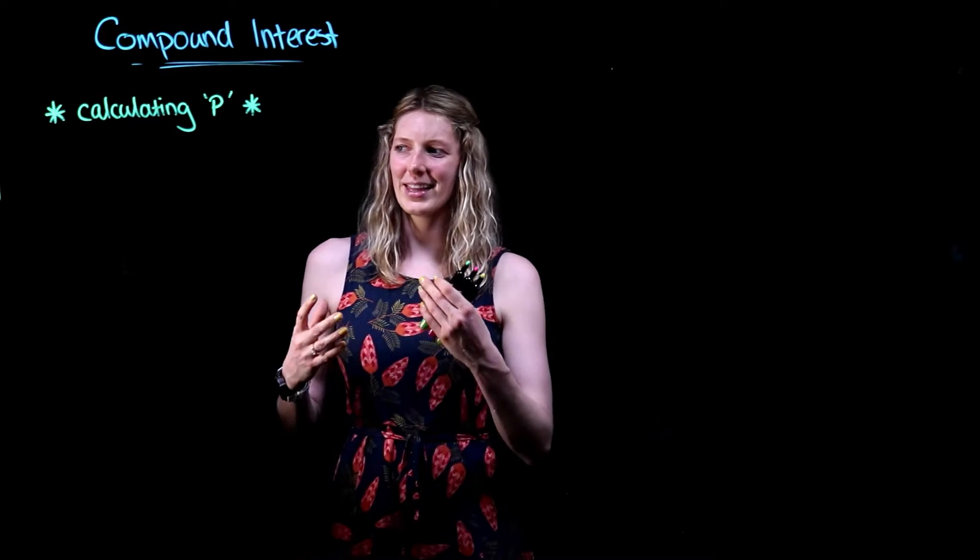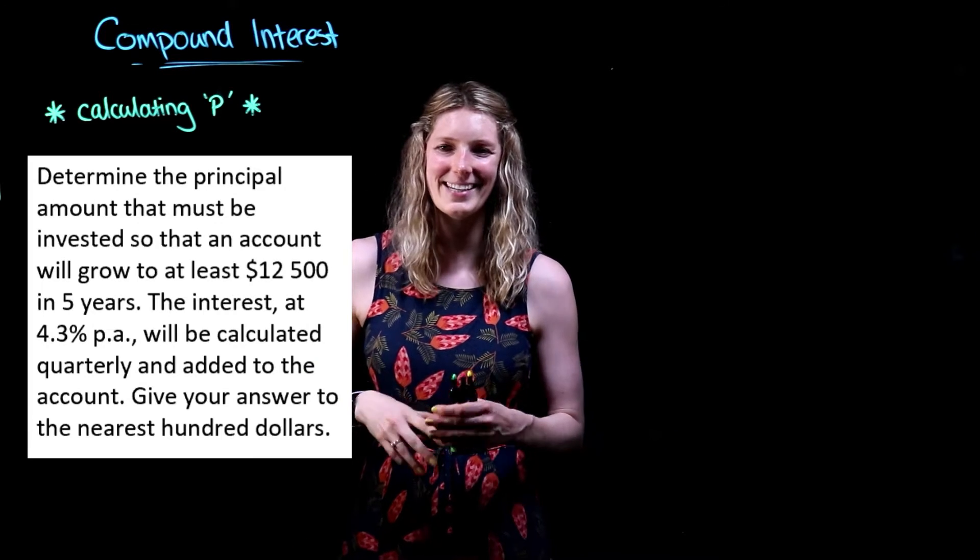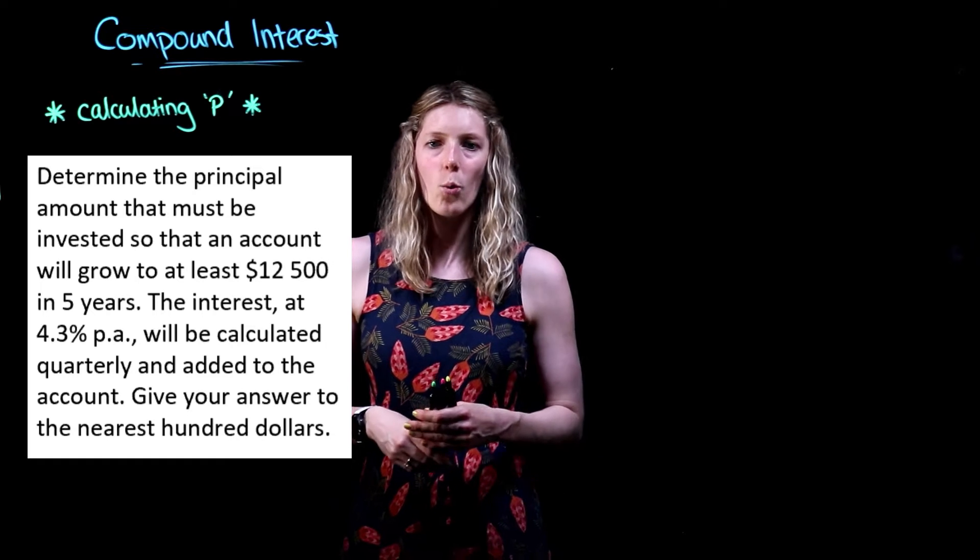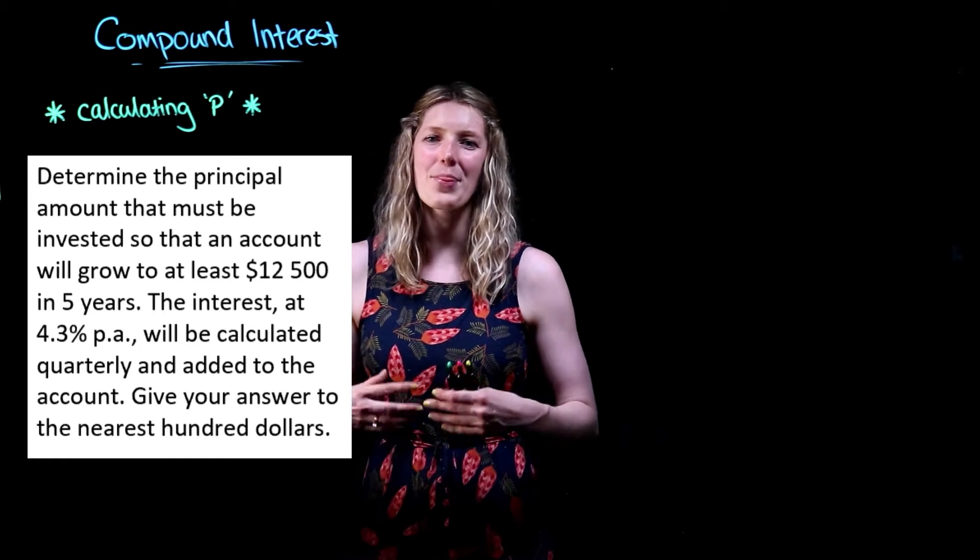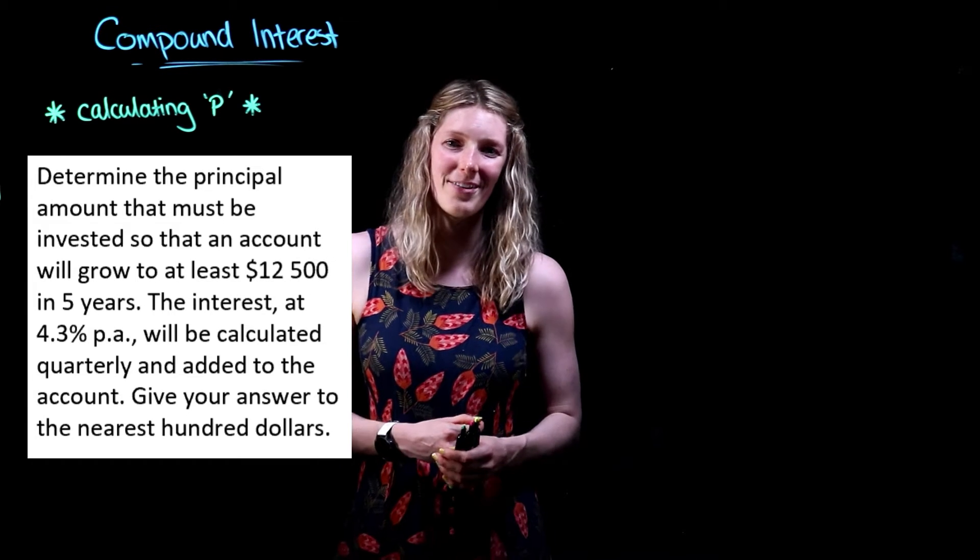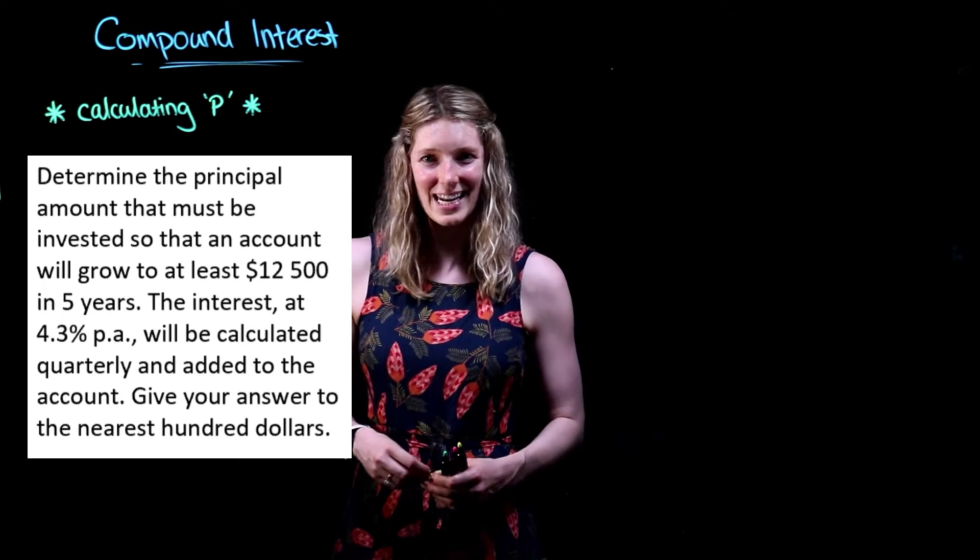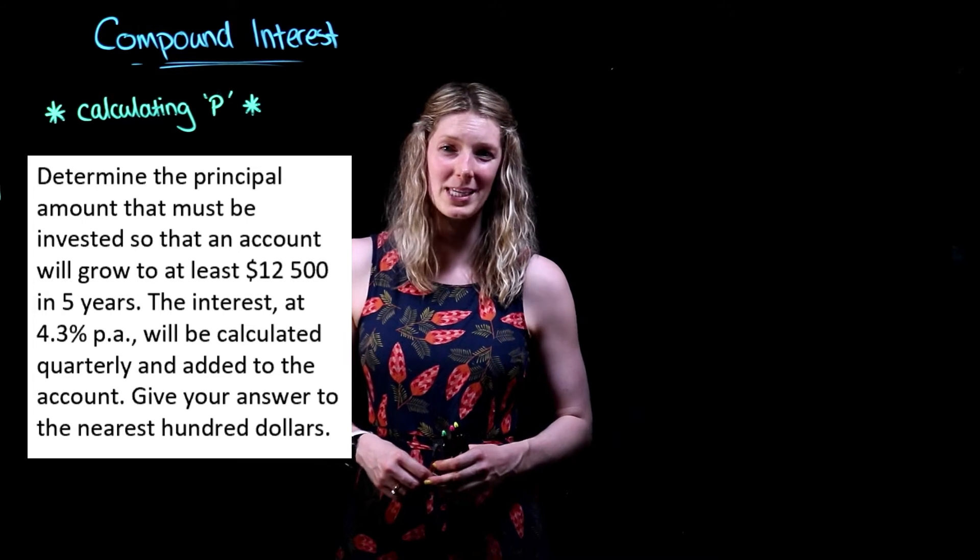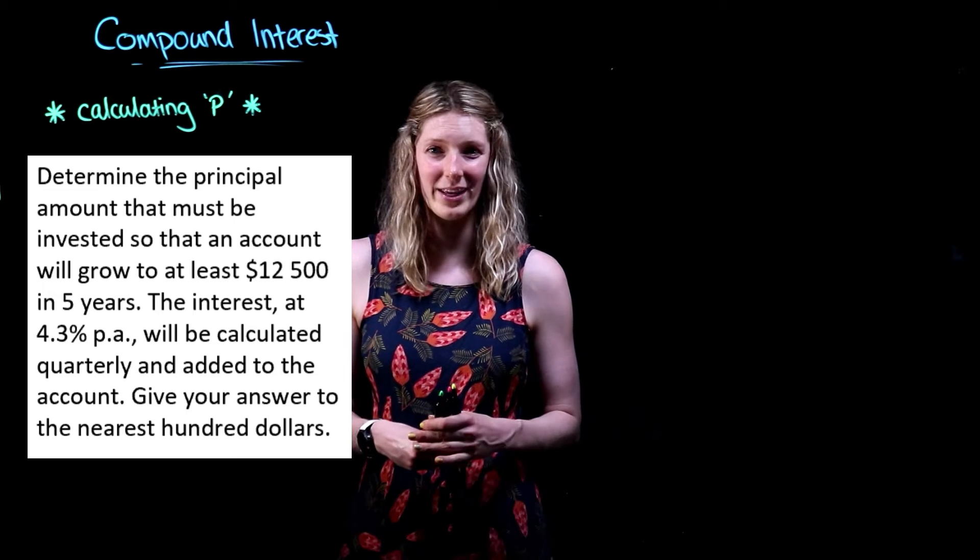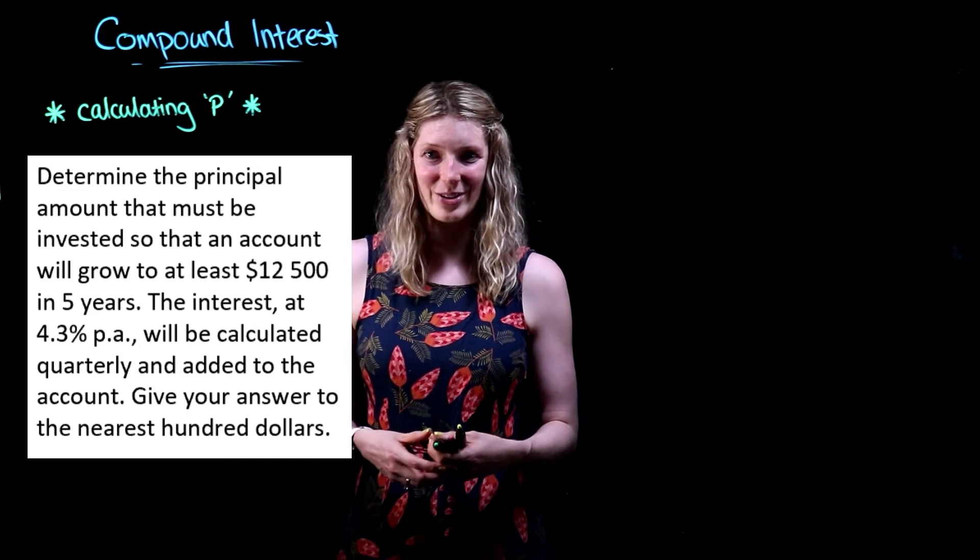Now for calculating P, or our principal, we have this problem here to start off with. We've been asked to determine the principal amount so that our investment can grow to $12,500 across five years, given that this investment has an interest rate of 4.3% per annum that's compounded quarterly. We've also been told to round our final answer to the nearest hundred dollars.